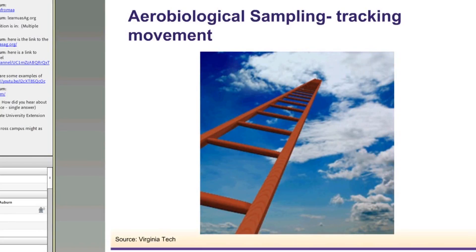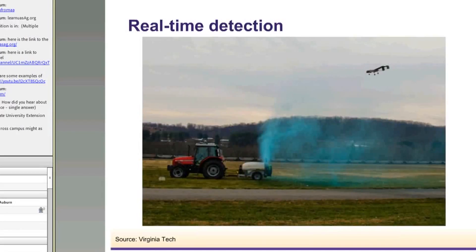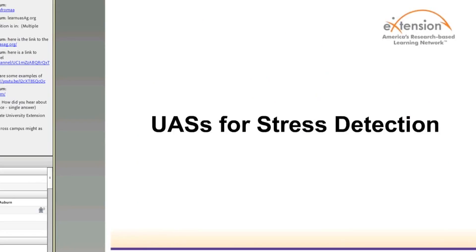Moving on from field-based pests and diseases in fruits and vegetables, researchers have also been innovatively using unmanned aircraft for tracking movement of agricultural threat agents, such as plant and animal pathogens, invasive weeds, and exotic insects, using a process called aerobiological sampling. The slide on the screen shows real-time detection using unmanned aircraft for expanding our knowledge on the movement and structure of atmospheric populations of Fusarium, which is one of the most important genera of fungi on Earth.